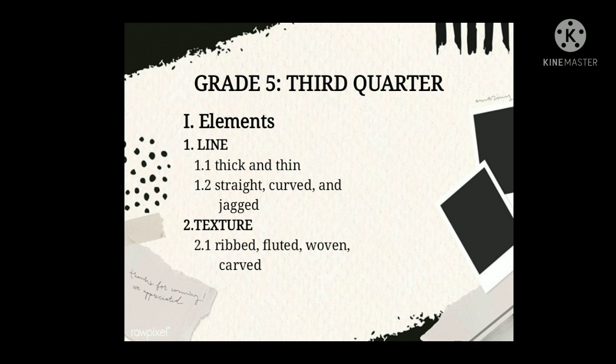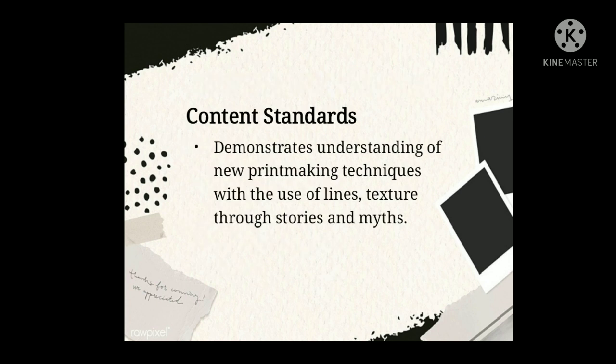Another element is texture. In the visual arts, texture is the perceived surface quality of a work of art. It is an element of two-dimensional and three-dimensional designs and is distinguished by its perceived visual and physical properties. In texture, there is ribbed, floated, woven, and carved.